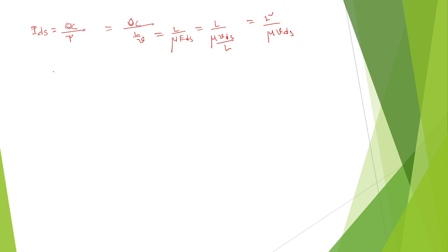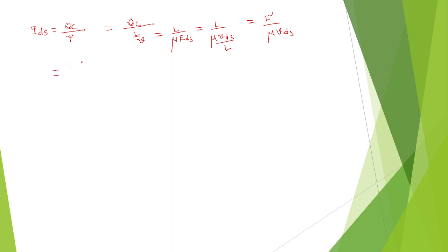So we can write IDS as Qc multiplied with mu times VDS divided by L squared.